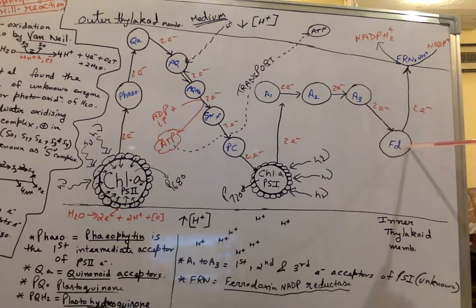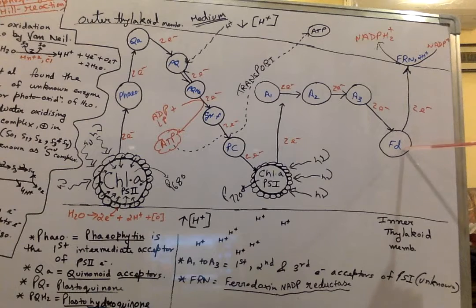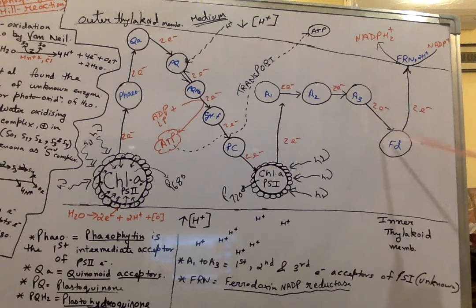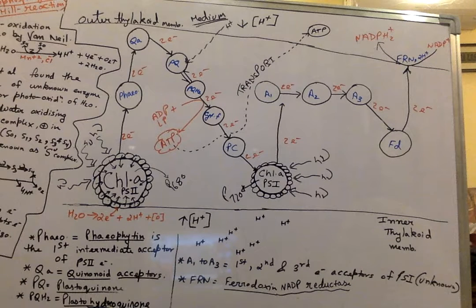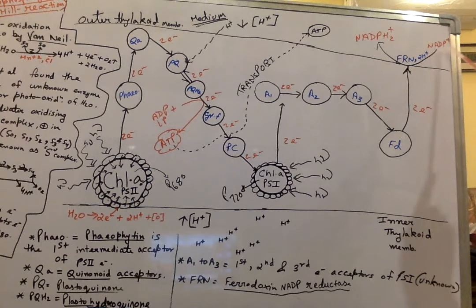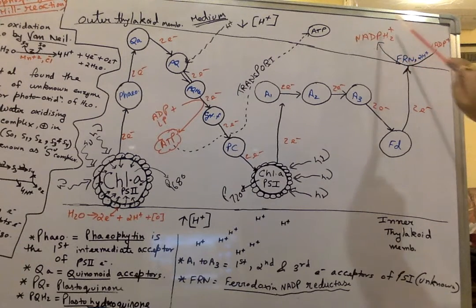From A3, electrons will move into ferredoxin (FD). This electron will help in the synthesis of NADPH2+, which is the second assimilatory power. Ferredoxin will release its electron to the outer thylakoid membrane, where in the presence of FNR (ferredoxin NADP reductase enzyme) and two hydrogen ions, NADPH2+ is synthesized from NADP+.